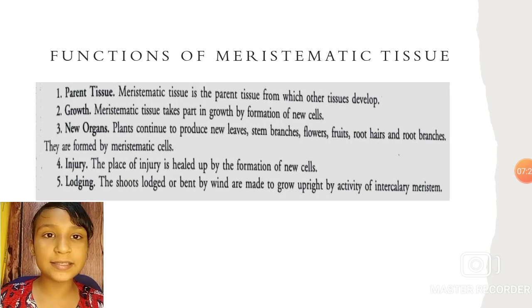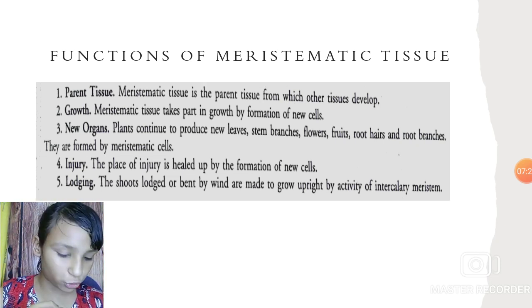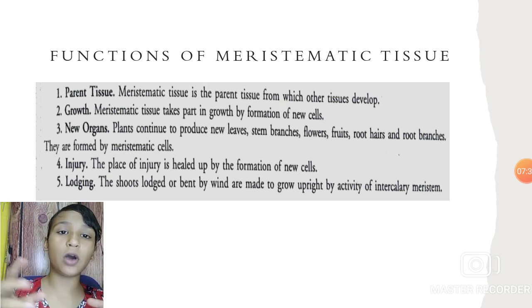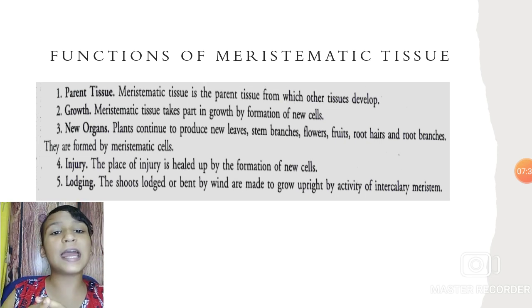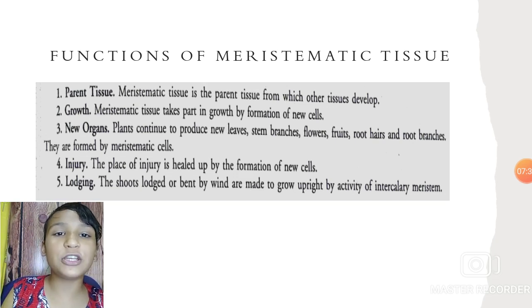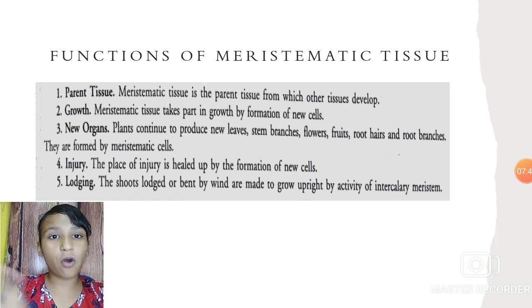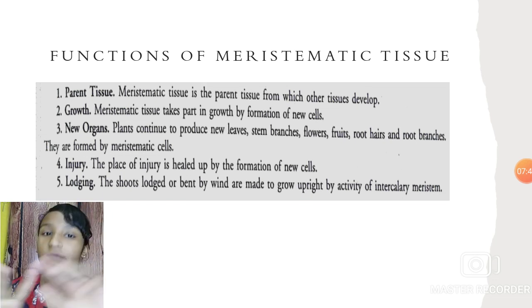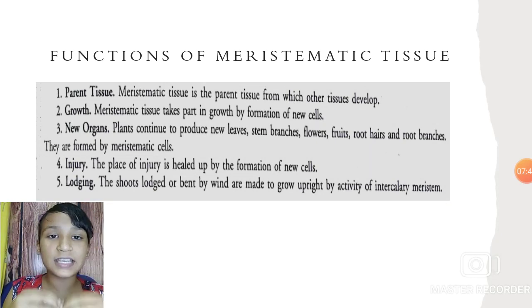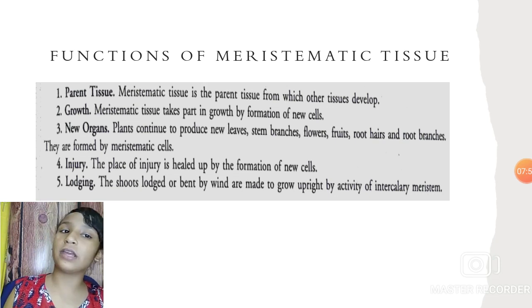Function of meristematic cells: they are known as parent cells for all other cells because they are the only ones that can divide. Meristematic tissue takes part in the formation of new cells and organs. These cells divide repeatedly to form organs and organ systems. At sites of injury, they heal by forming new cells.